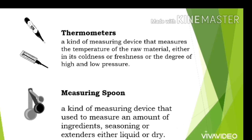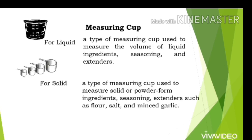Thermometer, a measuring device that measures the temperature of raw material either in its coldness, freshness, or the degree of high and low pressure. Measuring spoon, a measuring device used to measure an amount of ingredients, seasoning, or extenders, either liquid or dry. Measuring cup for liquid, used to measure the volume of liquid ingredients, seasoning, and extenders. Measuring cup for solid, used to measure solid or powder form ingredients, seasoning, and extenders such as flour, salt, and minced garlic.